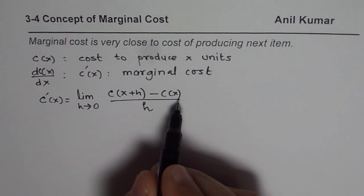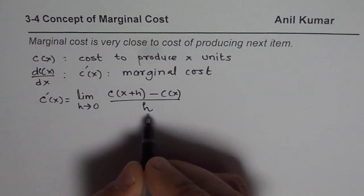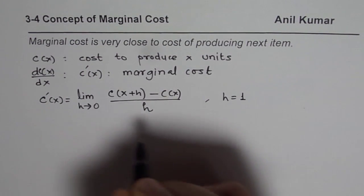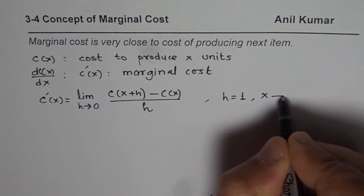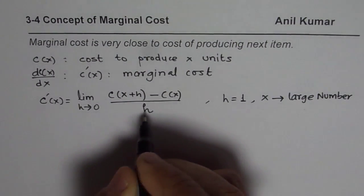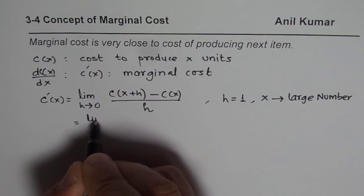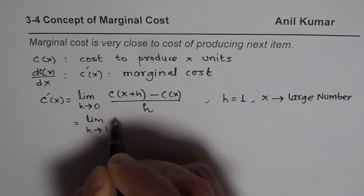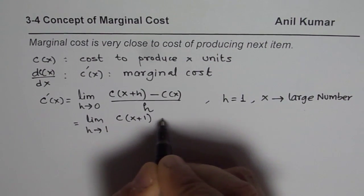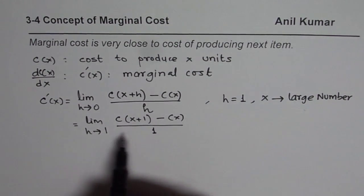Normally whenever we are producing items, these are discrete functions — we are talking about units being produced, and units will be in whole numbers. So what we could normally take is H equals to 1, with X as a very large number. In that case we could write this function as the limit when H approaches 1, giving us: cost of X plus 1 items minus cost of X items, divided by 1.